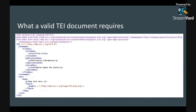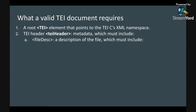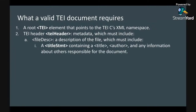What does a valid TEI document require? Most of you, when you open a TEI document in an integrated development environment such as Oxygen, will be able to open up a TEI P5 template document. P5 is the fifth iteration of the TEI guidelines and the current iteration. A TEI P5 template document will show you exactly what a TEI needs in order to be valid. It requires first and foremost a root TEI element that points to the TEI consortium's XML namespace. The second element required is a TEI header.